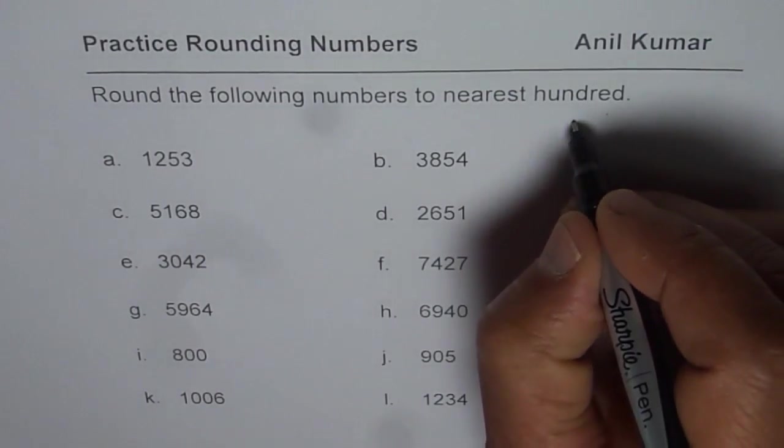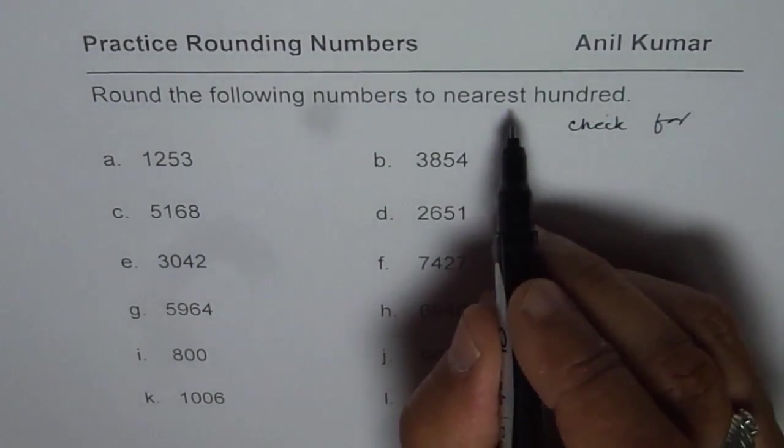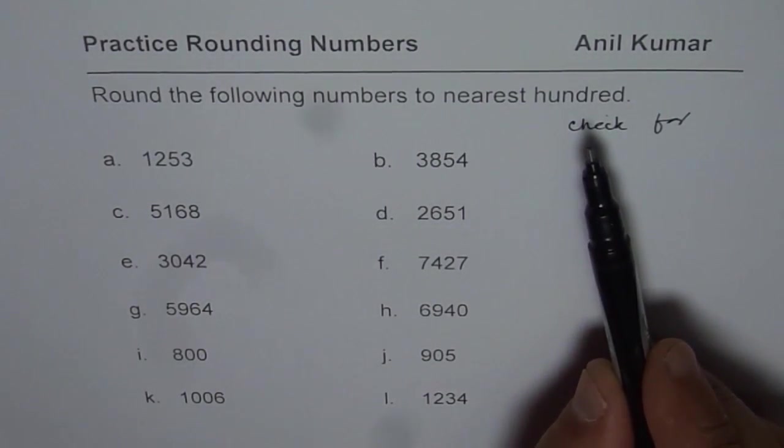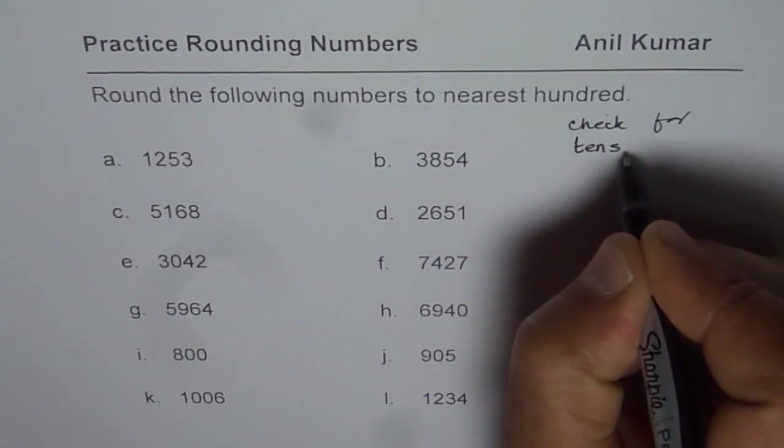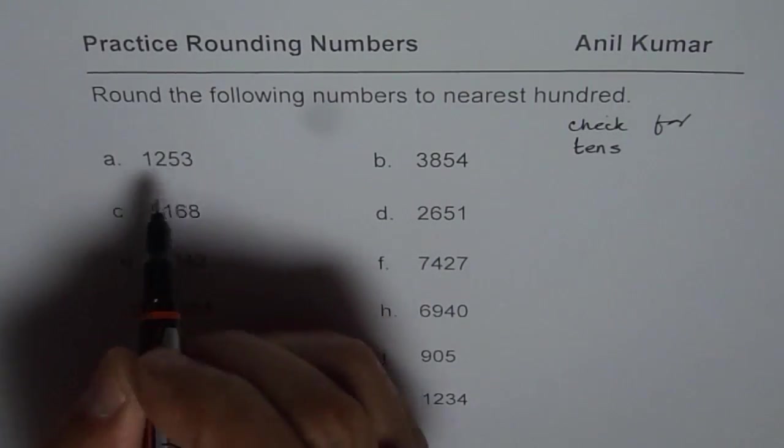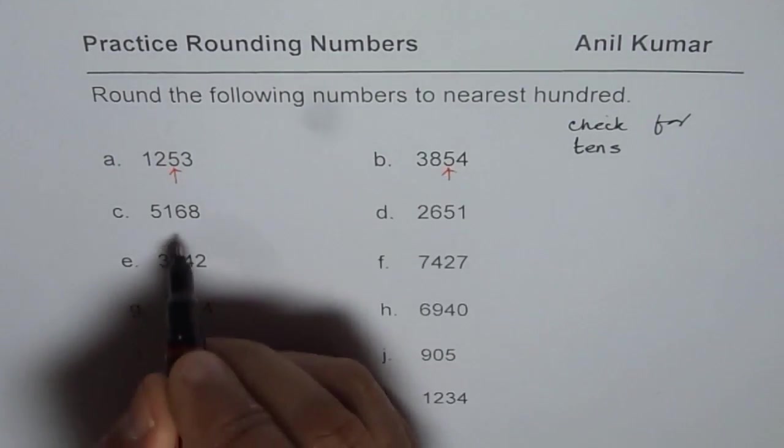Rounding to hundreds means you need to check for which place? You are rounding to hundreds. So like 100, 200, 300 you need to check for place value tens. You need to check for tens. So tens are, this is unit, that is tens. So this number second from the right side is tens place.